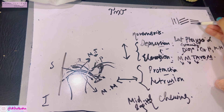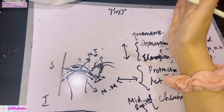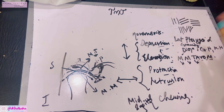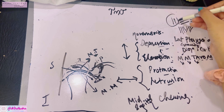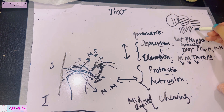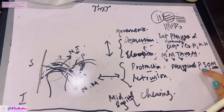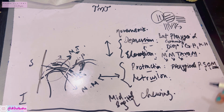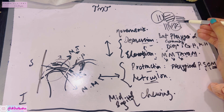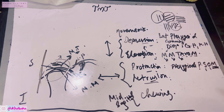The temporalis has anterior vertical fibers, oblique middle fibers, and posterior horizontal fibers. The masseter has superficial oblique fibers and deep vertical fibers. Protraction is produced by both lateral and medial pterygoid muscles plus the superficial oblique fibers of the masseter (mnemonic: P-SOM — Pterygoids, Superficial Oblique Masseter). Retraction uses the remaining fibers: posterior horizontal fibers of temporalis and deep vertical fibers of the masseter.